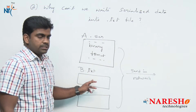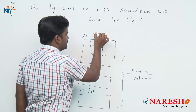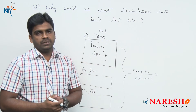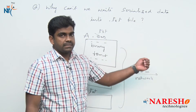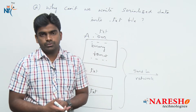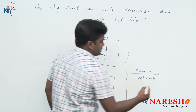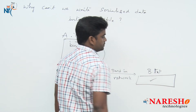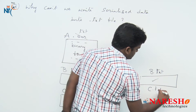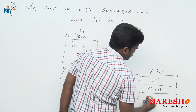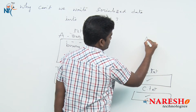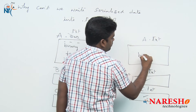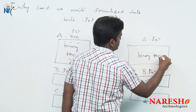Instead of using a .ser file, if you use a .txt file, will it write? Yes, it will write the information. But whenever we are sending it over the network, the people might be confused. The reason is: whenever the person opens b.txt, the data inside will be in a readable format, and if the person opens c.txt, that is also in a readable format.